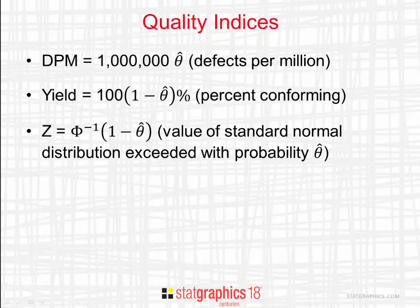I can also calculate a z-index for my process by taking the inverse standard normal distribution and evaluating it at 1 minus theta hat. That gives me the value of a standard normal distribution which is exceeded with probability theta hat.